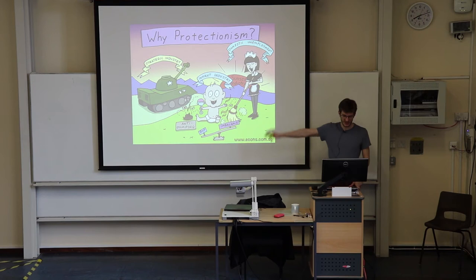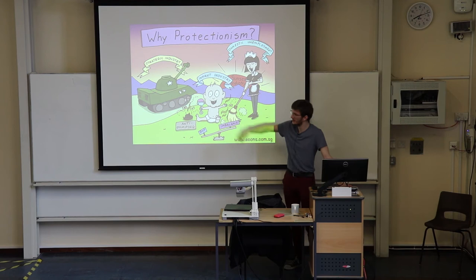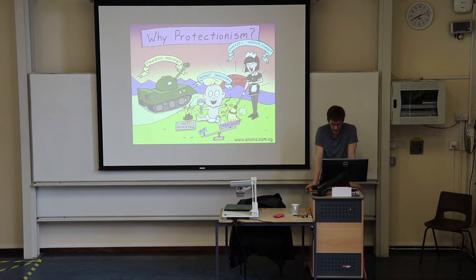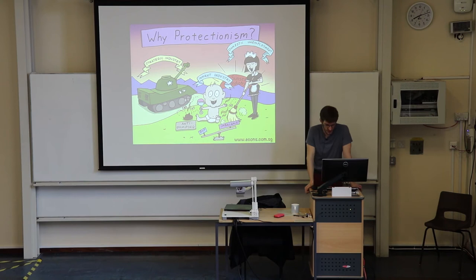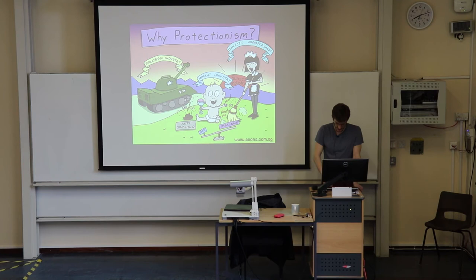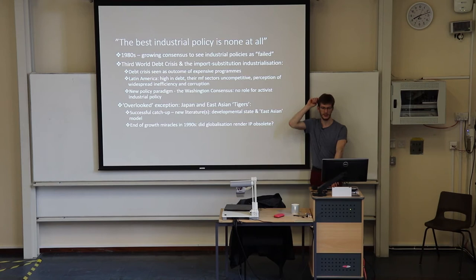This picture is one of the best summaries of why you use protections and industrial policy broadly — it illustrates strategic industries, infant industry protection, sunset industry, domestic unemployment, and balance of trade. The use of industrial policy was scaled down in the 1980s when it was perceived to have failed.